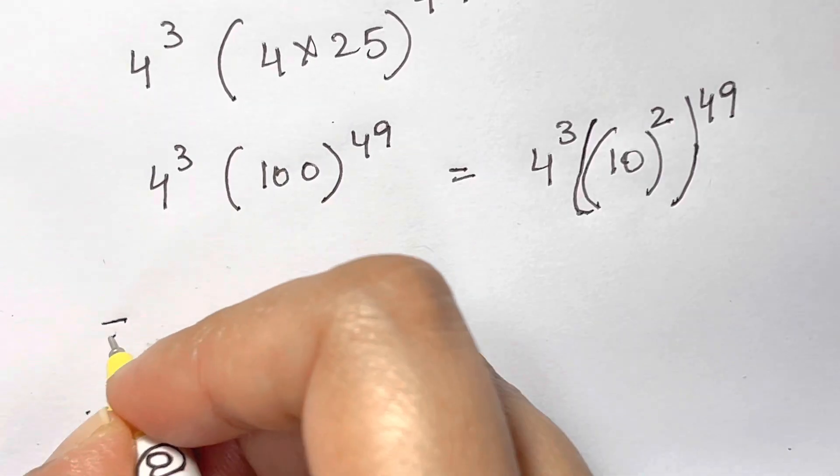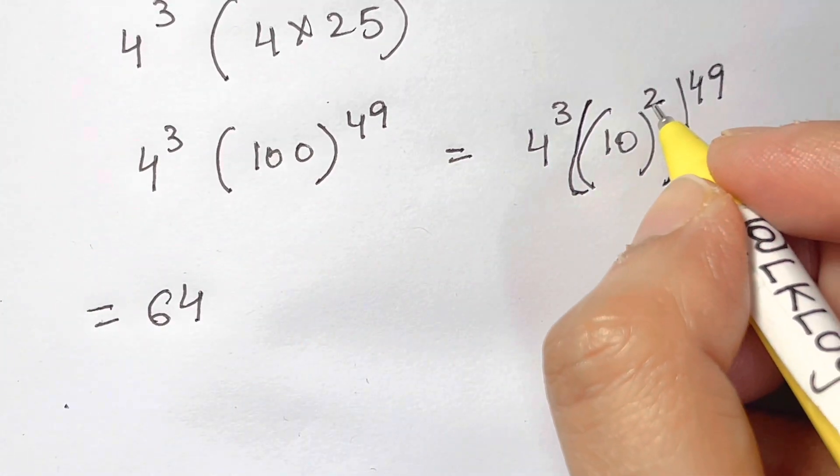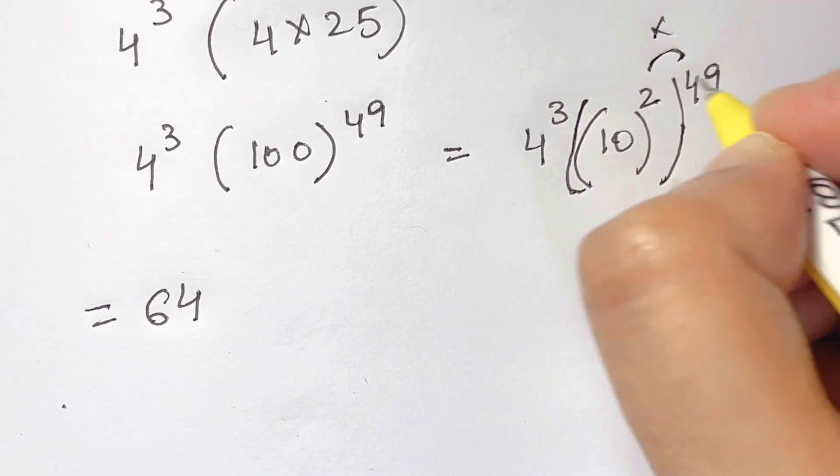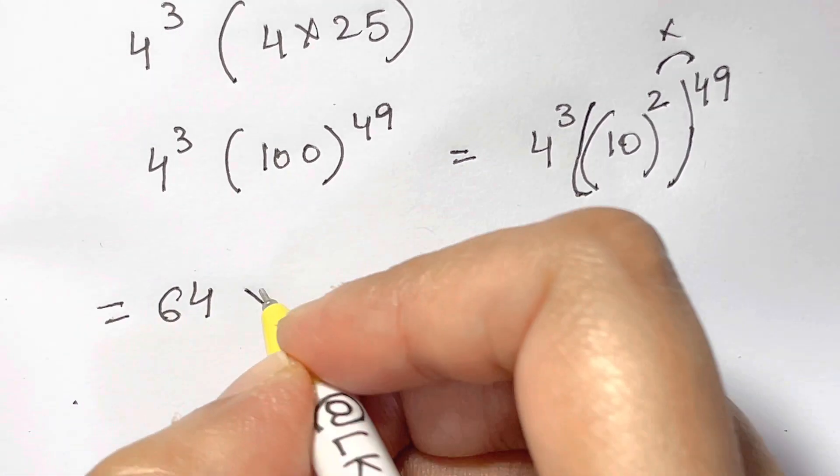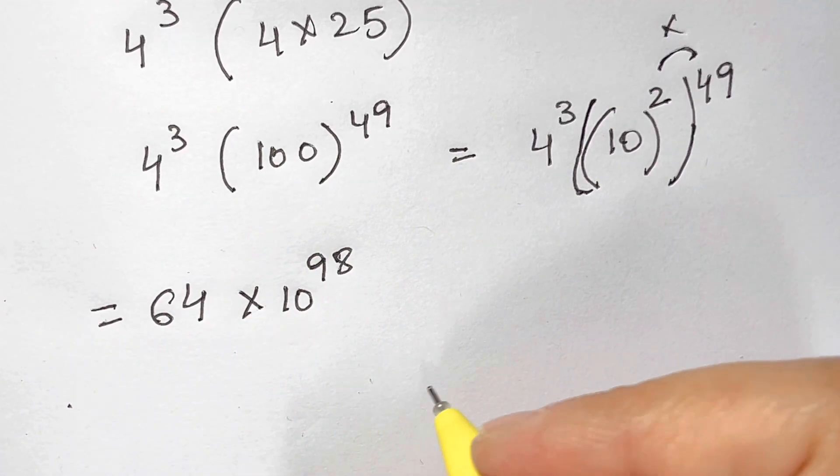4 cubed is 64 times you have power to power, so what do we do? We multiply the powers. 2 times 49 is 98, so we have 64 times 10 to the power of 98.